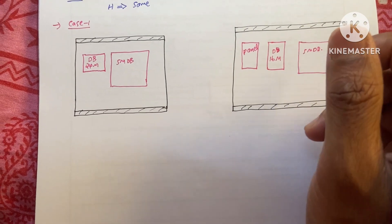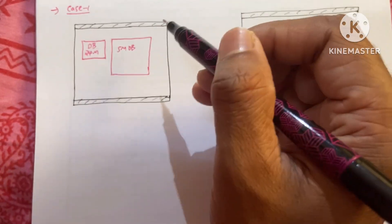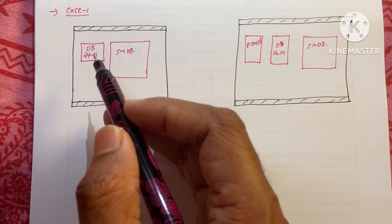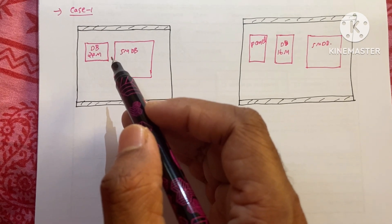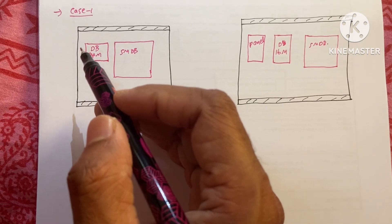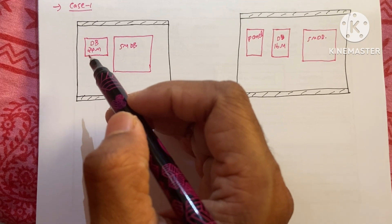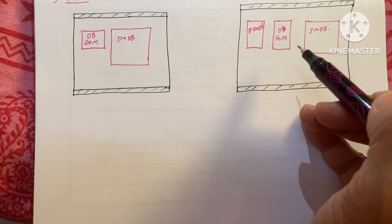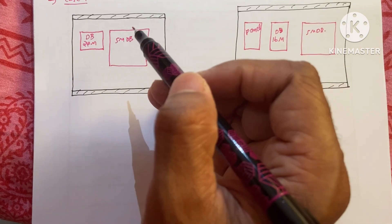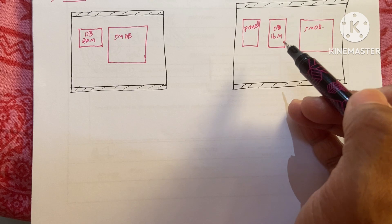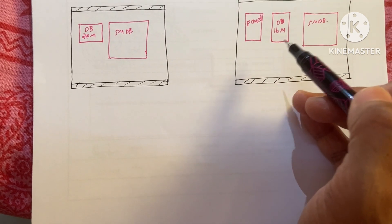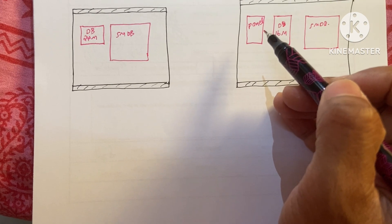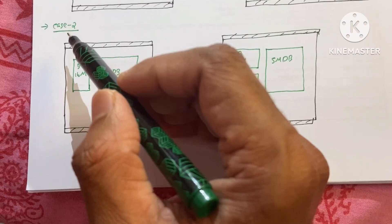Understanding DB sizes is important for practical layout. For example, suppose you have a wall with an SNDB and a 24-module DB, and you want to place a control panel but have no space. In this case, you can change the 24-module DB to a 16-module DB. Since the 16-module DB has less width, you free up wall space where you can place the control panel, accommodating one more panel in the same wall.